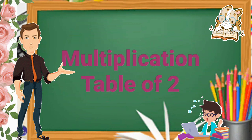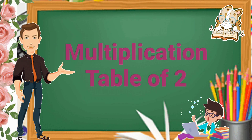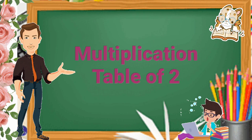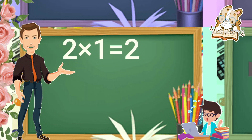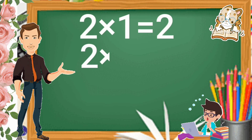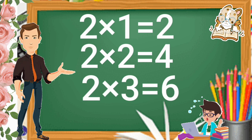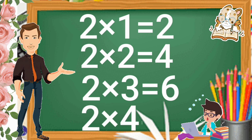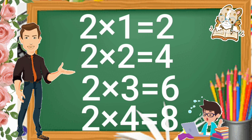Multiplication Table of 2. Let's start. 2 times 1 is 2. 2 times 2 is 4. 2 times 3 is 6. 2 times 4 is 8.